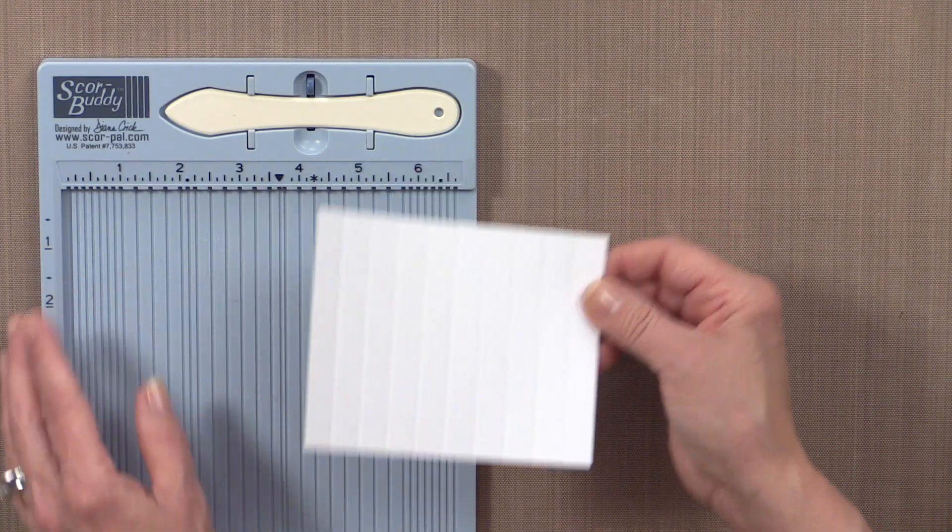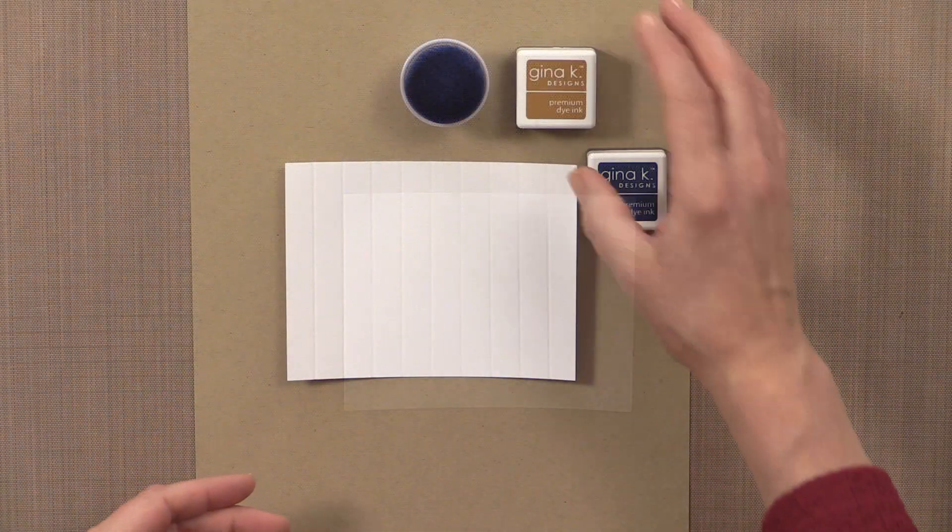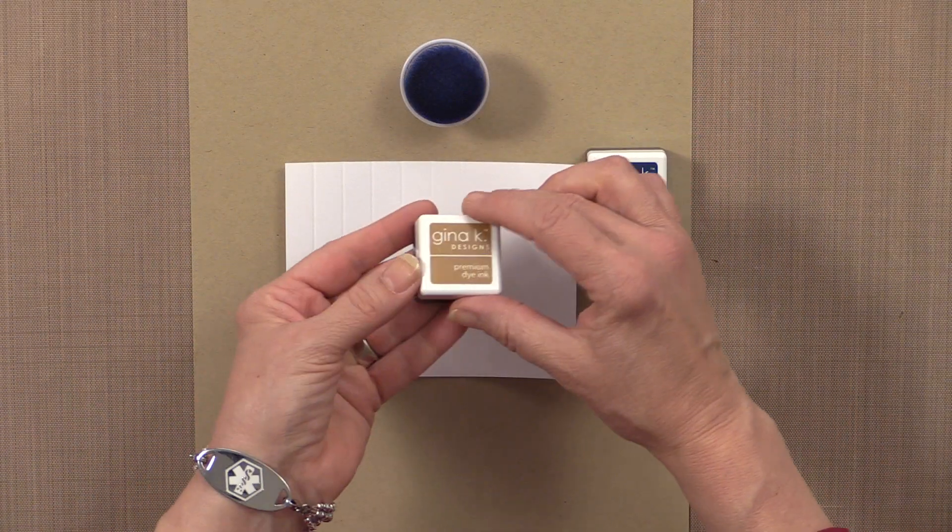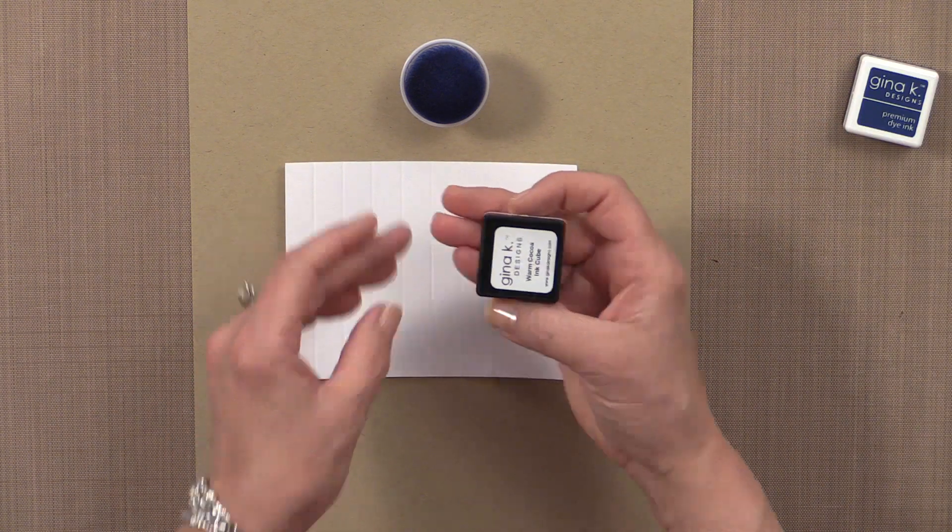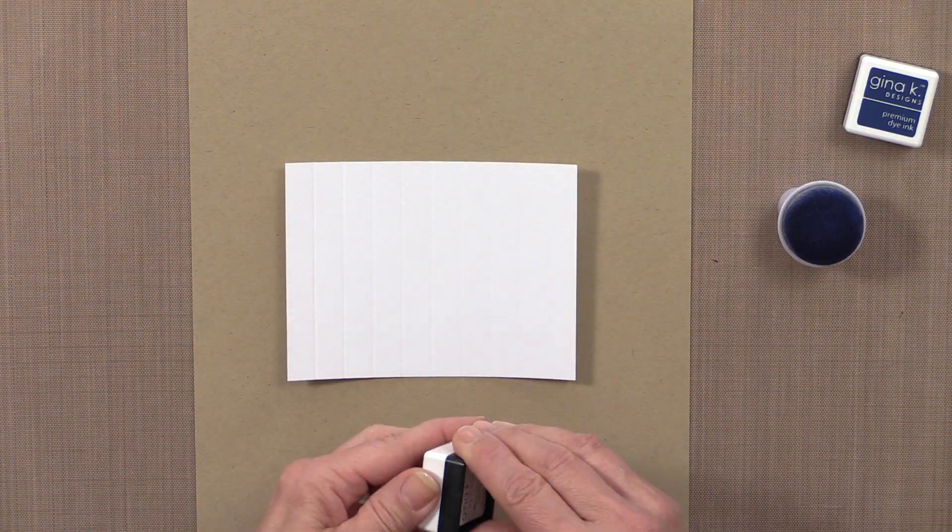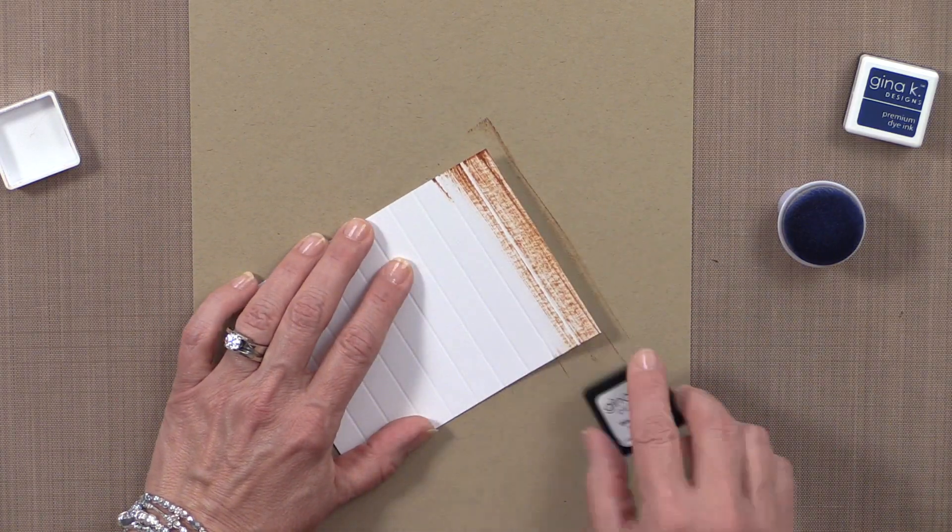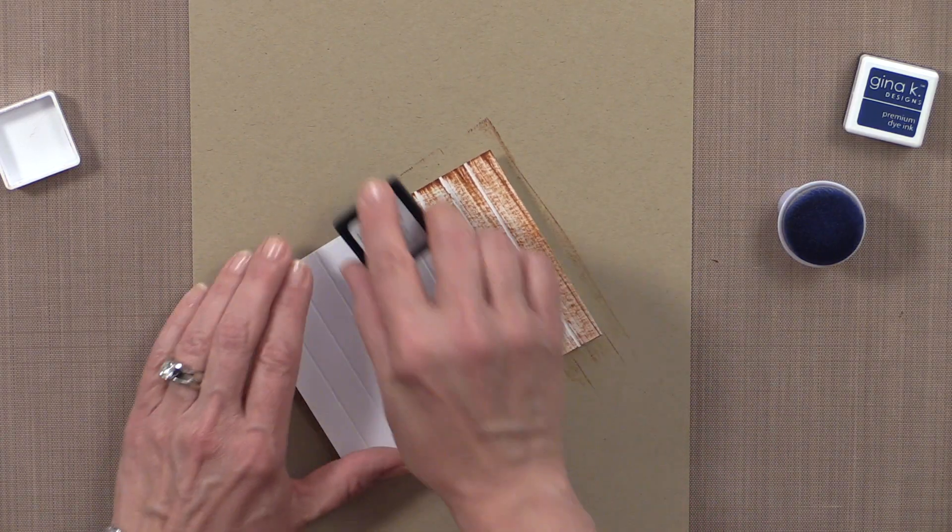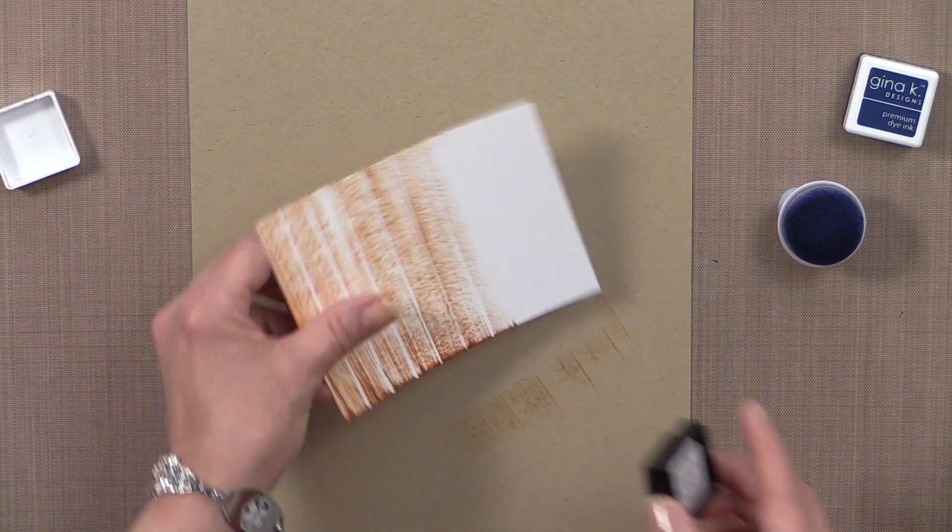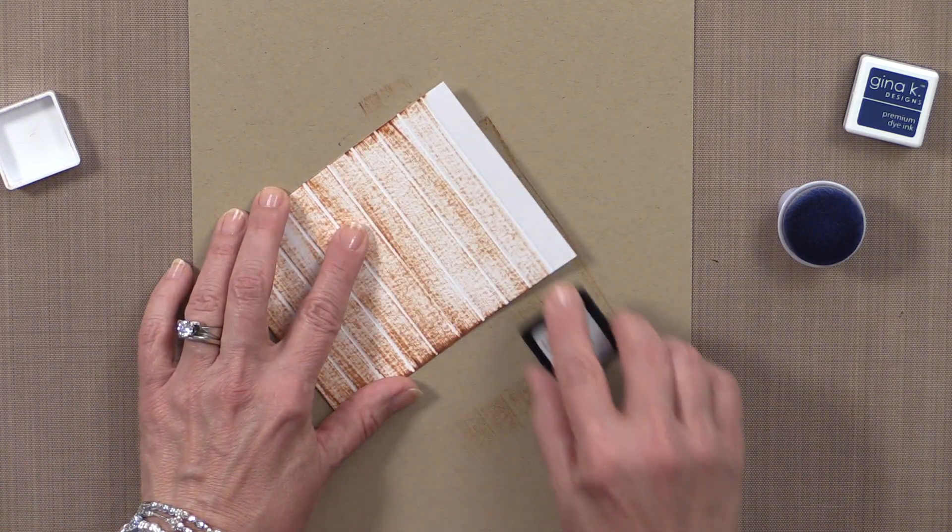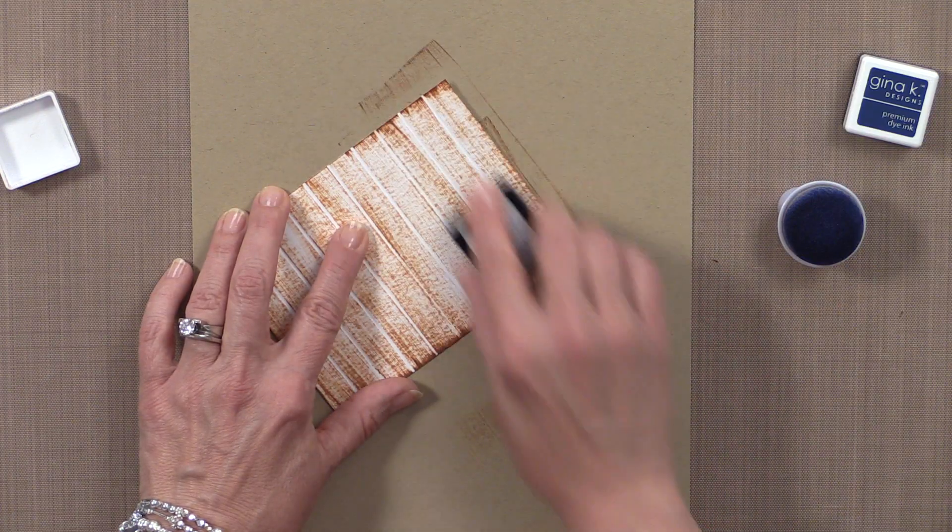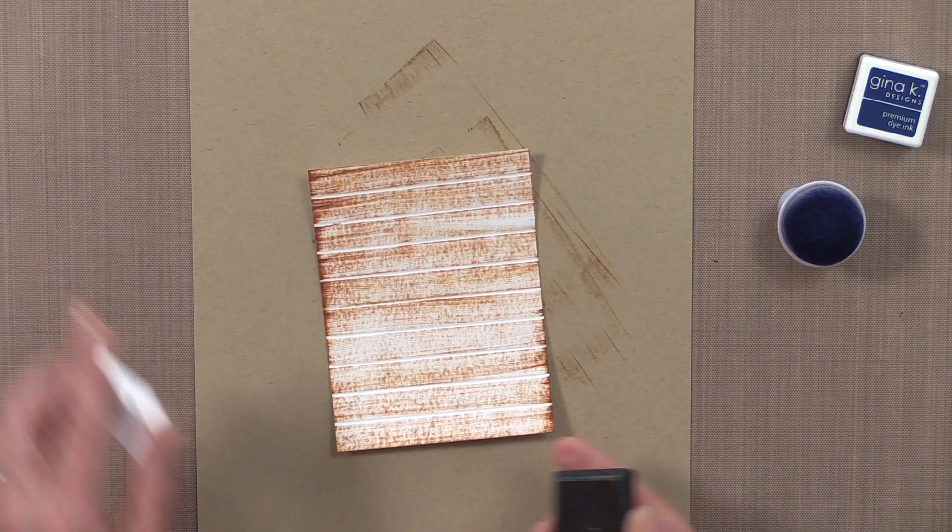So now I'm going to grab my warm cocoa ink cube and do the same thing that I did with the last one. I'm going to do nice even streaks, but very light. I'm not going to press very hard at all. I'm not going to worry if there's a lot of white showing. I kind of want that in there for this technique. And I'm going to finish that up just like that.